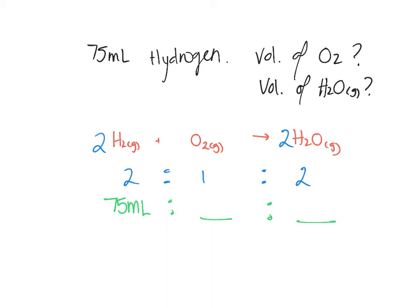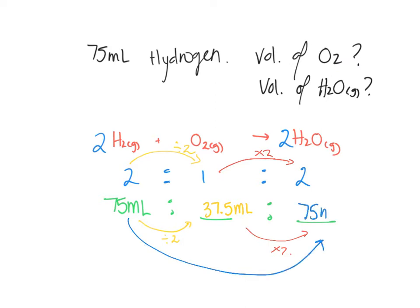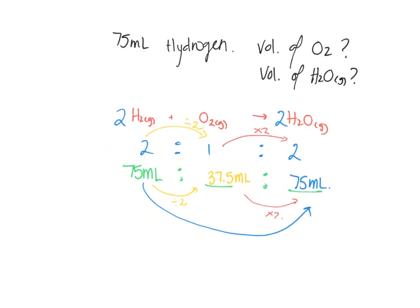So using ratios, we need to divide by two to get from hydrogen to oxygen. So dividing 75 by two, we are going to get 37.5 milliliters. Then to find water vapor, we either need to multiply by two or realize that it's the exact same value here. So we should have 75 milliliters.